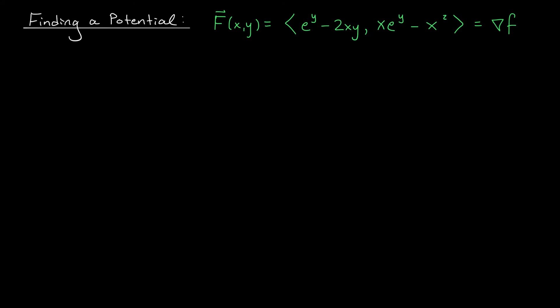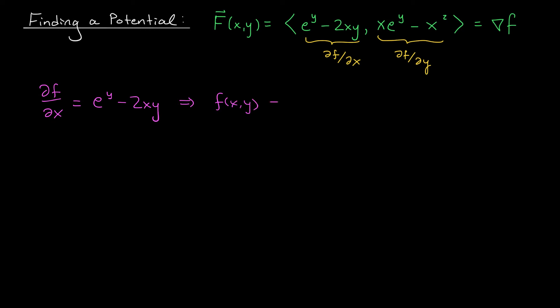We're going to carry out the same process to find our potential function little f. We know that ∂f/∂x = eʸ − 2xy, and ∂f/∂y = xeʸ − x². We start by undoing one of these expressions with an antiderivative — I'm going to start with the first one. Since ∂f/∂x = eʸ − 2xy, we have that f(x,y) equals the integral of (eʸ − 2xy) dx. The antiderivative of eʸ with respect to x is xeʸ, and the antiderivative of 2xy with respect to x is x²y. So I have f(x,y) = xeʸ − x²y + g(y).